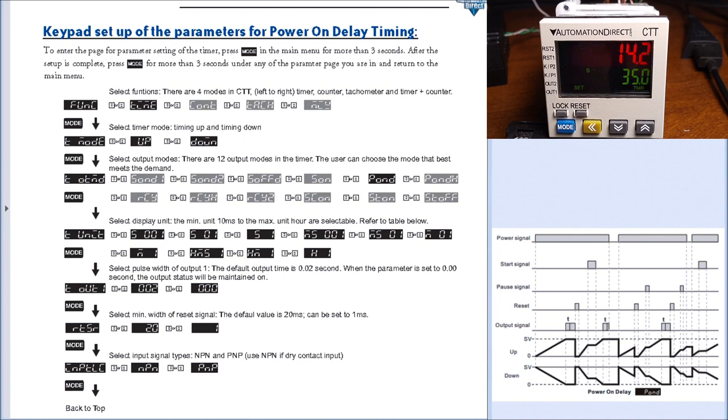So that is the power on delay timer using the CTT, which is our counter timer and tachometer all in one base unit. Now all the links and documentation can be found on our website accautomation.ca. They can also be found below this video here in the links below.